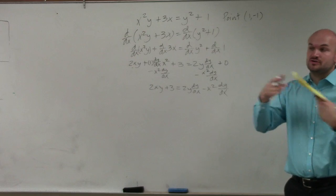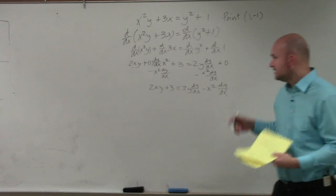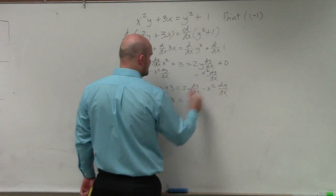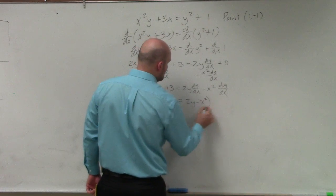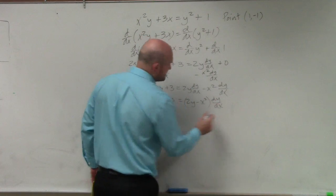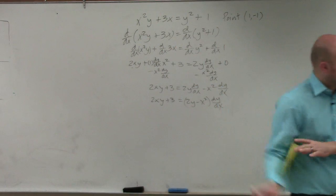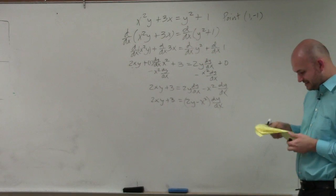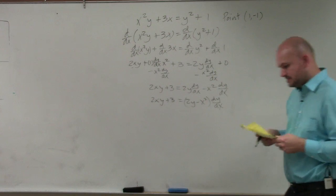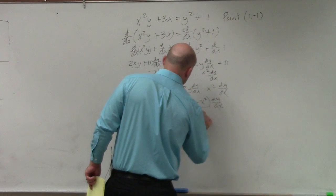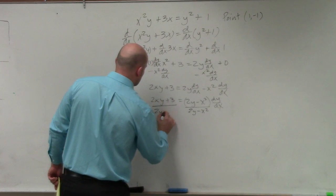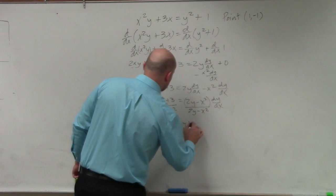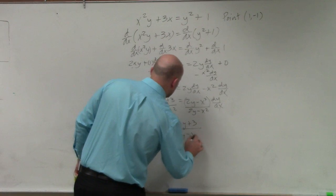To solve for dy/dx, I need to factor out the dy/dx. So I have 2xy + 3 equals, factoring out the dy/dx gives me (2y - x²) times dy/dx. Now I can divide by (2y - x²), and I get dy/dx = (2xy + 3)/(2y - x²). However,